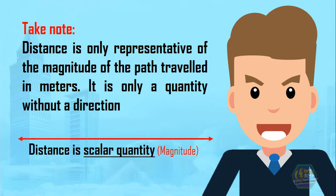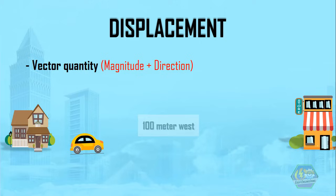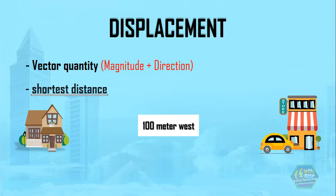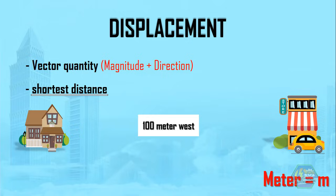For that, we need a new term which is displacement. Displacement is a vector quantity, which is the shortest distance traveled between the initial and final point of the traveling object. The SI unit of displacement is also meter.